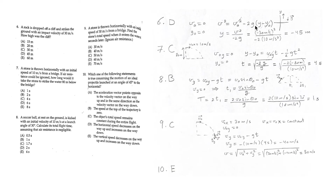Using the equation y equals v² over (minus 2g), with y0 = 0 and v0 = 0, v equals minus 30 m/s because the velocity is directed downward when it hits the ground. This gives y equal to minus 45 meters below the dropping point. So the answer is D.